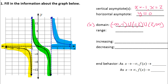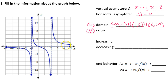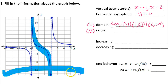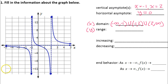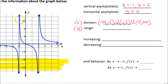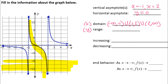Now for the range — the range is the y values. If you look at just the middle piece, that part alone contains every y value from negative infinity to positive infinity. When you're doing the range, you can't really look at one branch at a time because at any given y value you're hitting two different parts of the graph. So the range is negative infinity to infinity.